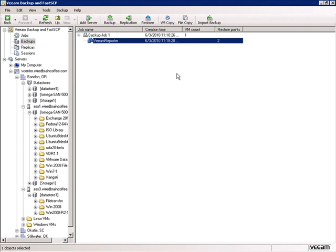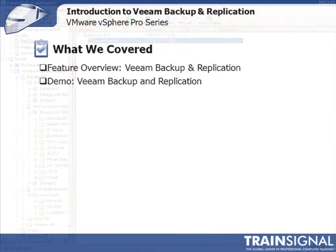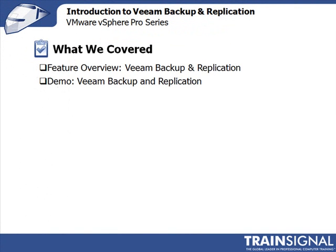In this video series, I'll be showing you how to add servers, how to create backup jobs, how to restore virtual machines at the image level and file level, how to perform replications, as well as a number of other very cool features. That brings us to the end of this introduction video. I covered features like Data Deduplication, ESXi support without VCB, File Level Recovery, the Enterprise Management Console, Near-CDP Replication, and Replica Rollback, plus a quick demo of the interface. After this, I'll show you how to download and install Veeam Backup, then we'll start the configuration process and walk through performing these various tasks. Thanks for watching.